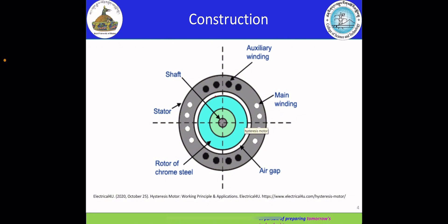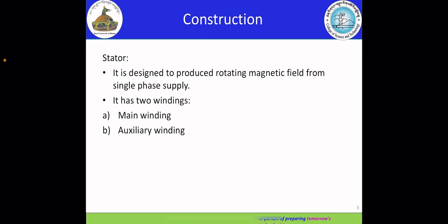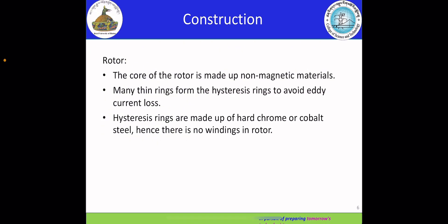Next, I am going to present on the construction of hysteresis motor. Firstly, the stator. It is designed to produce a rotating magnetic field from single-phase supply. It has two windings: main winding and auxiliary winding.